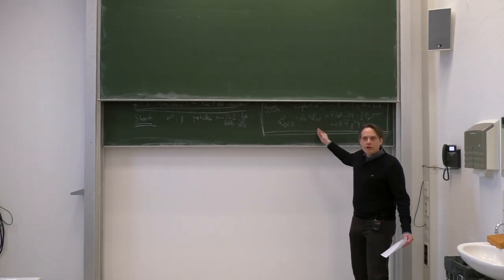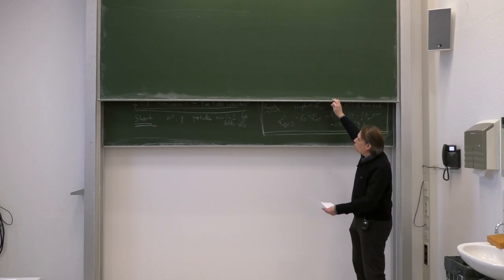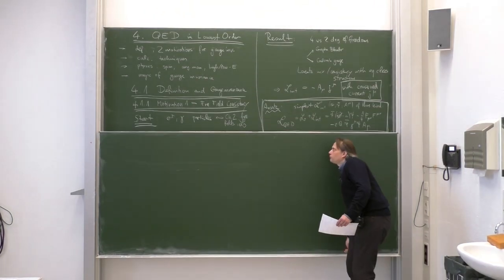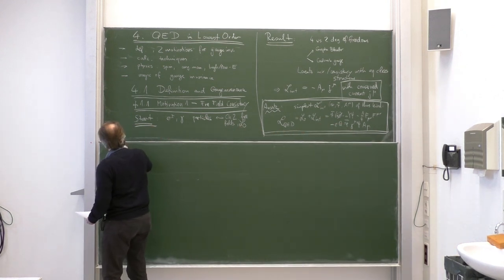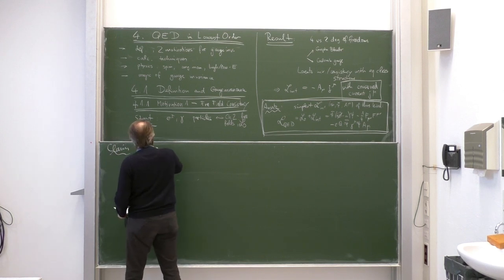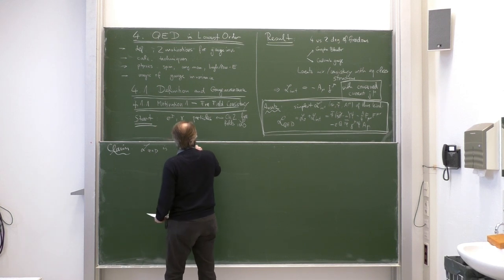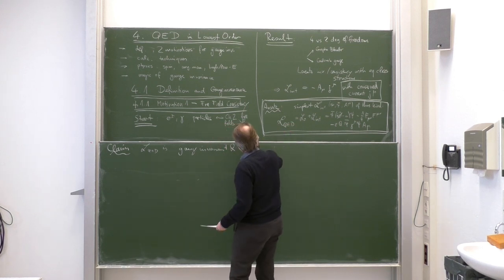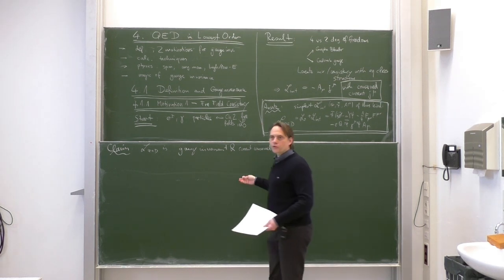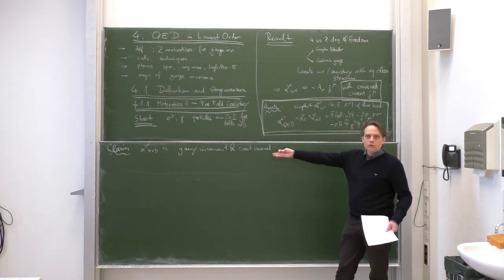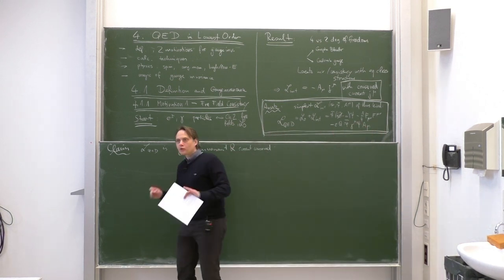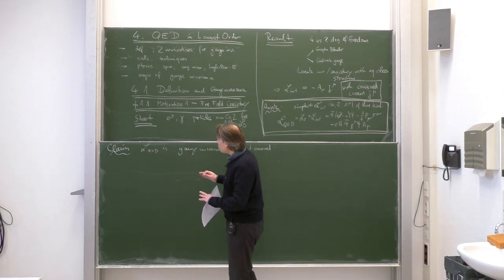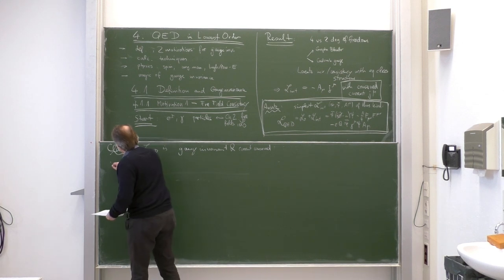So this is our first motivation for QED. It is the simplest theory with an interaction which is consistent with the free fields — electron, positron, and photon. Now we can discuss the properties of this Lagrangian. Namely, let us prove that this is gauge invariant and that the current is conserved. The claim is that this Lagrangian is gauge invariant. I will be a little bit more detailed than you might expect, because I will distinguish here between global and local transformations.